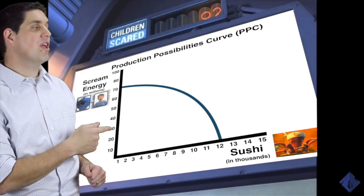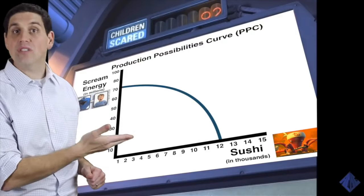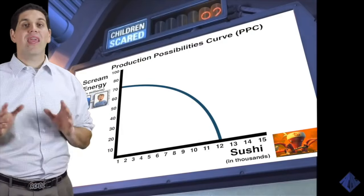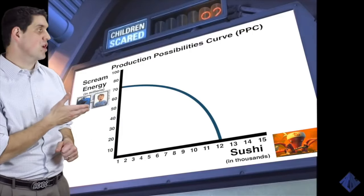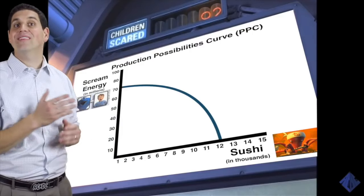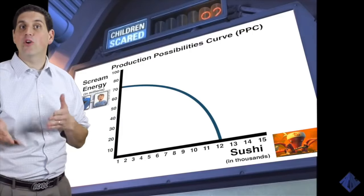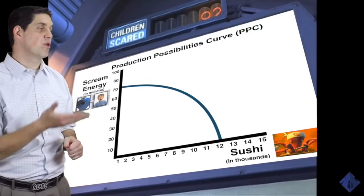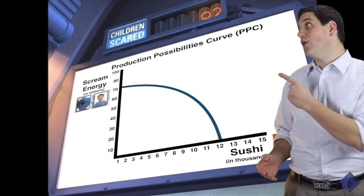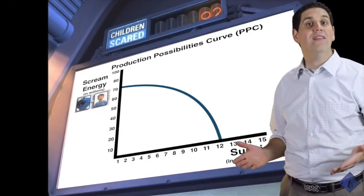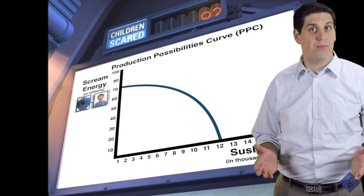As you can see, they can put all their resources to produce Scream Energy, or they can produce all Sushi, or some combination in between. But notice they can't get any combination outside the curve. They can't put all of their resources into producing Scream Energy and at the same time put all those resources into producing Sushi. So any combination outside the curve is impossible.